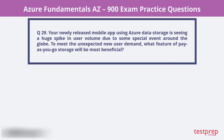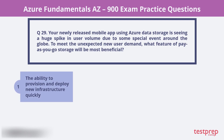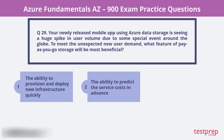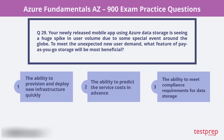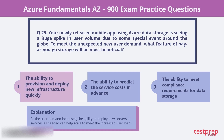Question 29. Your newly released mobile app using Azure Data Storage is seeing a huge spike in user volume due to some special event around the globe. To meet the unexpected new user demand, what feature of pay-as-you-go storage will be most beneficial? 1. The ability to provision and deploy new infrastructure quickly. 2. The ability to predict the service costs in advance. 3. The ability to meet compliance requirements for data storage. The correct choice is 1. As the user demand increases, the agility to deploy new servers or services as needed can help scale to meet the increased user load.